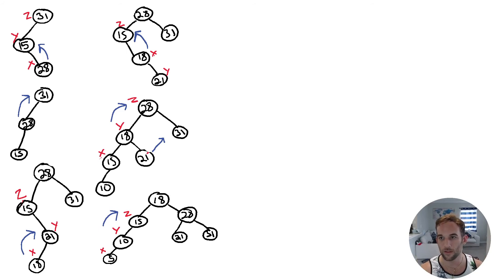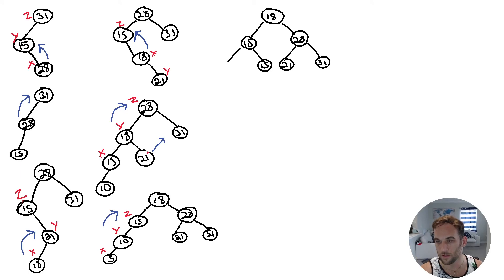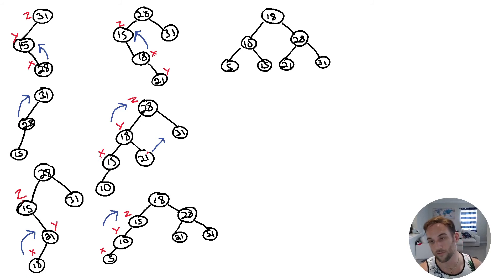So Z is 15 — the first node not balanced. Y is 10, the child with the greatest height. X is 5. This is a single rotation because it's left heavy and all on a straight line. We move Y up to Z in a trinode restructuring, making 10 the new parent. So now it looks like 18 at the root, 28 to the right with 31, and 10 to the left with children 5 and 15. This is now balanced.